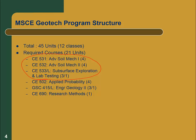There's another group of required support classes: a probability class — because geotechnical engineering is a highly uncertain business and understanding probability theory is important — an engineering geology class, which is a 400-level undergraduate class that has a prerequisite of an introductory geology class, so if you've never had one you'll need to take that too. And finally, the research methods class, which I'll talk about later.